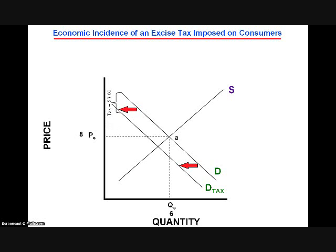Let's assume, for the sake of illustration, that the amount of the tax is $3 per unit. Notice that the new demand curve intersects the supply curve at a new point, indicating one effect of the tax — it decreases the level of output in the market.